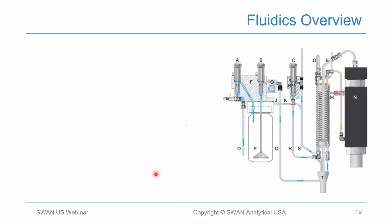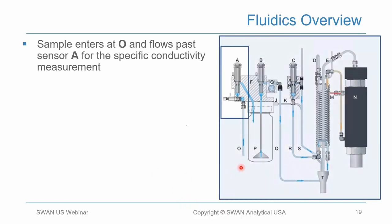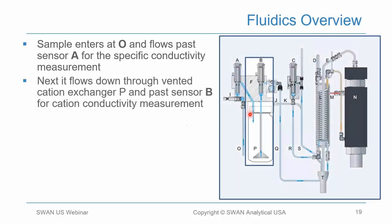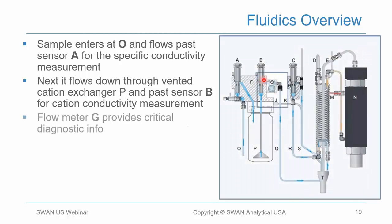Looking at the fluidics overview: the sample enters at port O, flows past the specific conductivity sensor, then enters the vented cation exchanger — flowing down to the bottom, then up through this pathway past the cation conductivity sensor. Once it exits the cation conductivity sensor, it flows through an integrated flow sensor so that you know your sample flow rate, which is very important. It then flows into the heat exchanger where the incoming sample cools the boiled sample, while also preheating the incoming sample to make the reboiler more efficient.